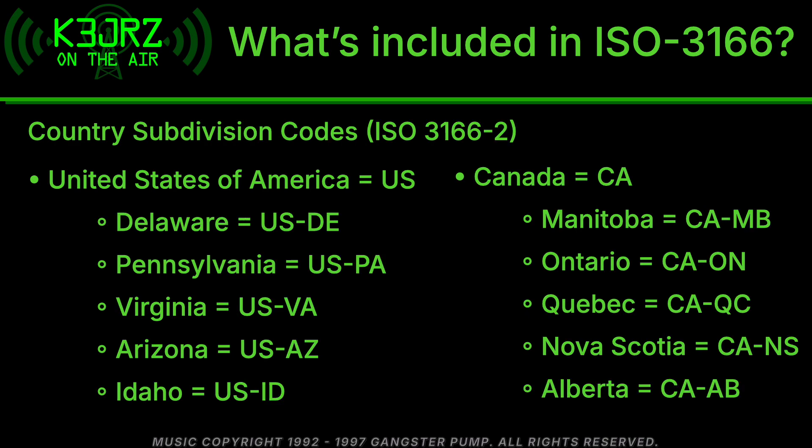ISO 3166-2 covers country subdivision codes. Using the United States as an example: the ISO 3166-1 code is just US, but the dash-2 code combines the country code with its subdivisions. So Delaware would be US-DE, Pennsylvania is US-PA, Virginia is US-VA, Arizona is US-AZ, and Idaho is US-ID.